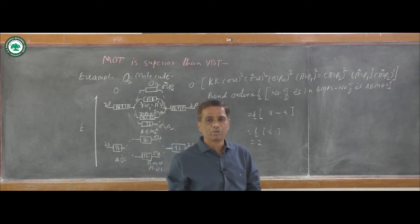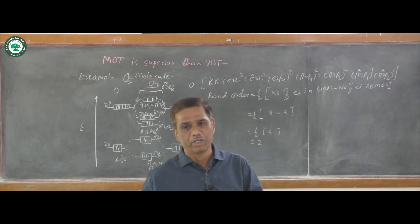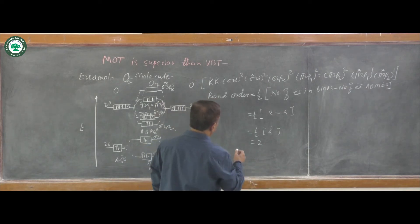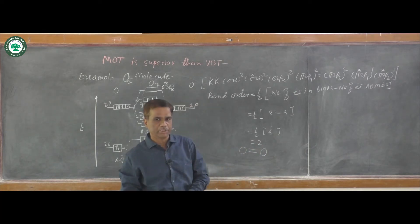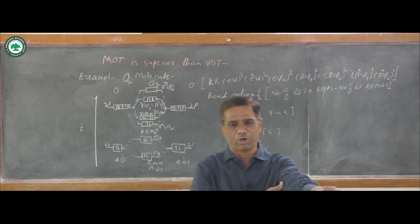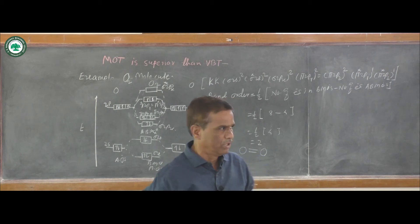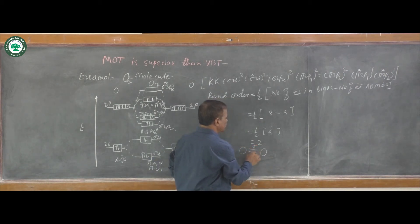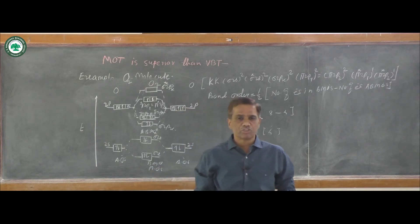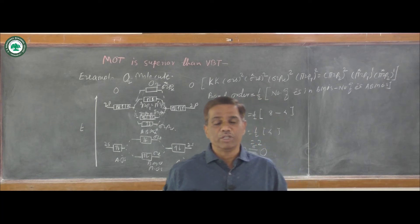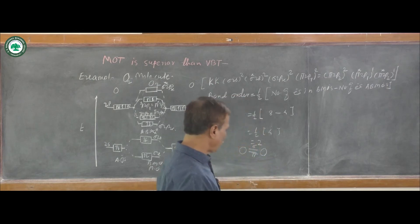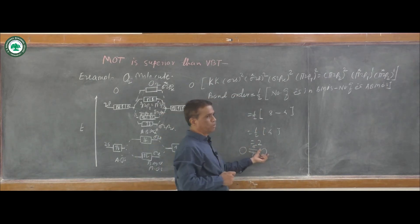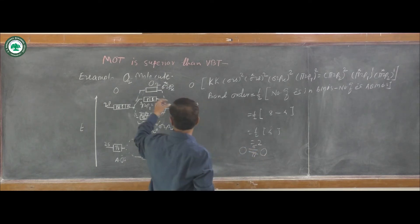According to molecular orbital theory, bond order in O2 molecule is 2, meaning there is a double bond between the two oxygen atoms. One bond is a sigma bond formed by linear combination of atomic orbitals, and the second is a pi bond formed by lateral or perpendicular (90-degree) overlap. So oxygen double bond oxygen exists in O2 molecule.